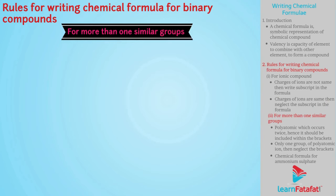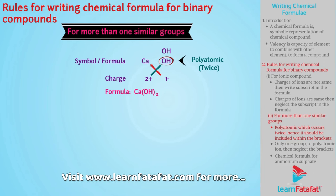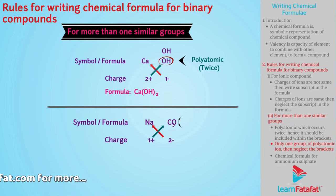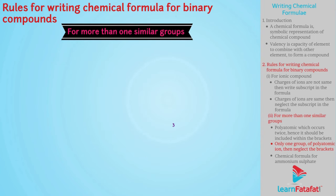For more than one similar groups, arrange elements or ions and their valencies or charges using previous process. Here, OH ion is polyatomic which occurs twice, hence it should be included within the brackets. Write the charges as a subscript outside bracket. If there is only one group of polyatomic ion, then neglect the brackets.